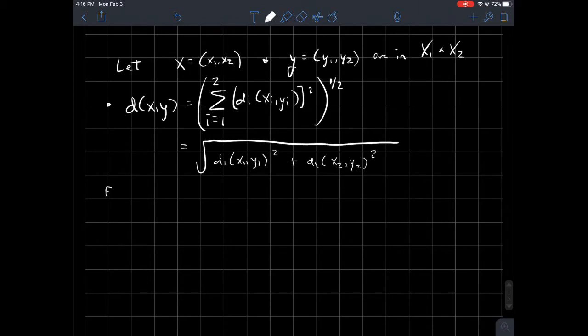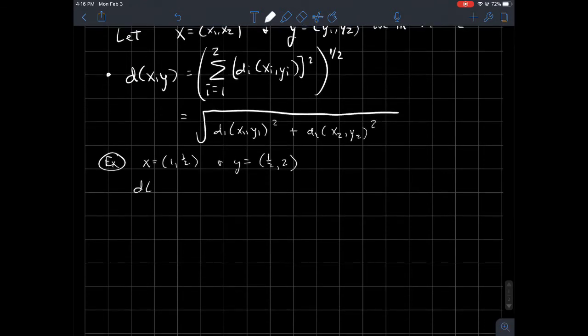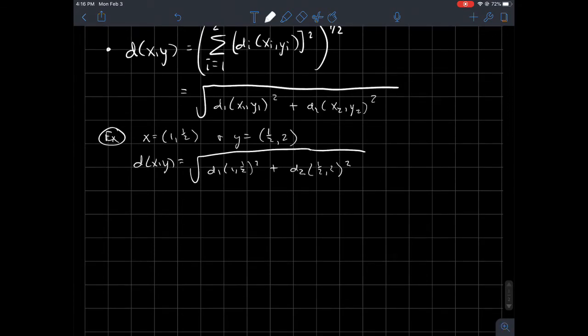So I'm going to give you an example here. Let's say that X is equal to one, one-half, and Y is equal to one-half, two. Then in this case, D of X, Y would look like the square root of D1 of one, one-half, that thing squared, plus D2 of one-half, two, that thing squared.